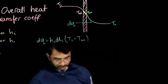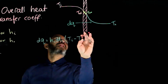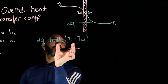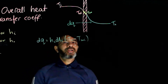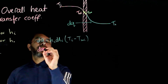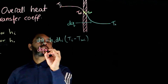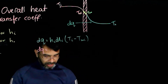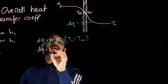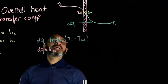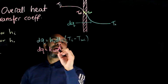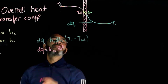Now the same amount of heat is passing through the wall. For the fluid side it is convection heat transfer; through the wall it is conduction heat transfer. We can write the same dQ in terms of the conduction heat transfer coefficient K of the wall, following the conduction heat transfer equation with area dA.